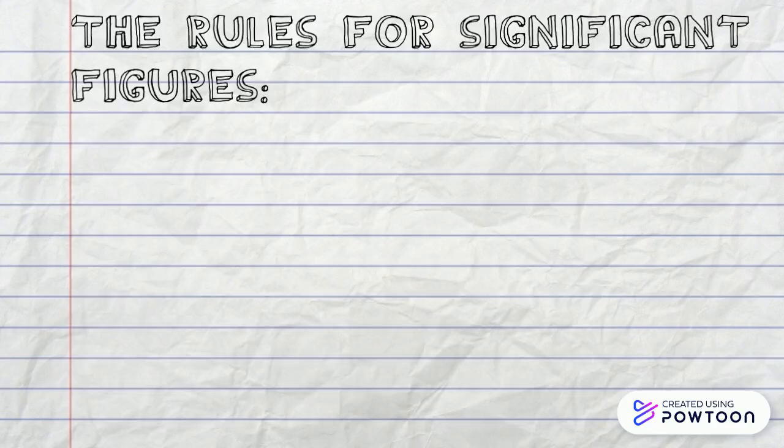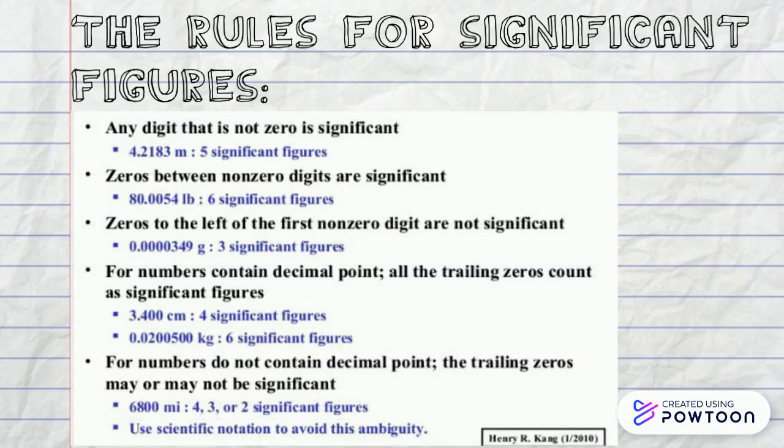The rules for significant figures: Any digit that is not zero is significant. Zeroes between non-zero digits are significant. Zeroes to the left of the first non-zero digit are not significant.